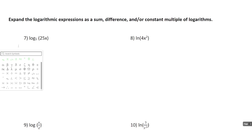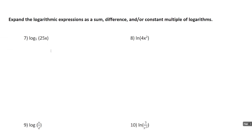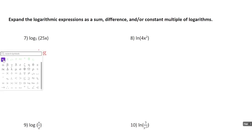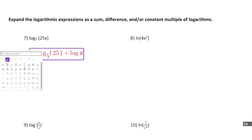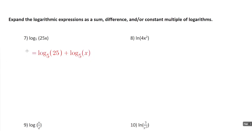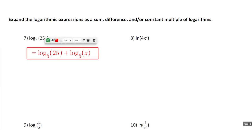For number 7 we've got log base 5 of 25x, and it says to expand the logarithmic expression as a sum, difference, or constant multiple of logarithms. We want to use the product and quotient properties, and possibly the power property. So this is going to be log base 5 of 25 plus log base 5 of x, using the product property. If you've got a product inside the parentheses, you can split each factor into its own logarithm with the same base and add them together.